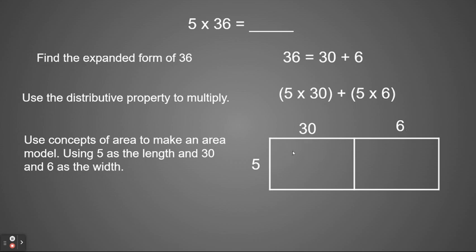So we're going to start in the first box and we have 5 times 30. We remember when we're multiplying times 10 and multiples of 10, I can take my basic fact of 5 times 3 is 15 so 5 times 30 is 150. In the next box we're going to do the same thing. We're going to take our length of 5 times our width of 6. So 5 times 6 is 30.